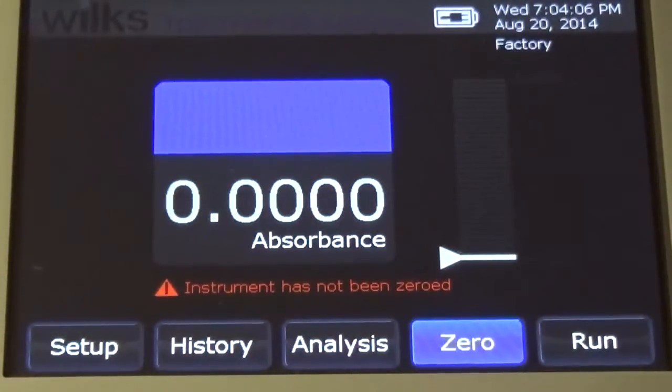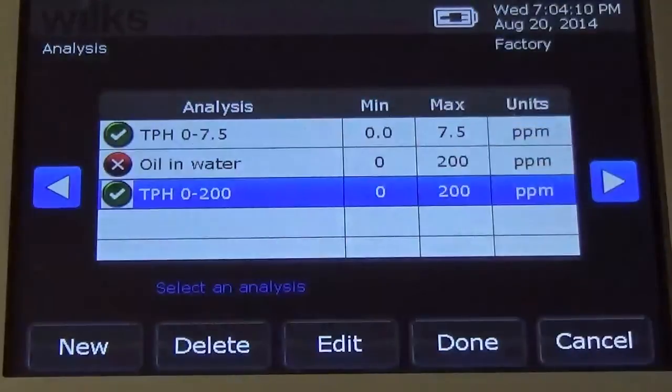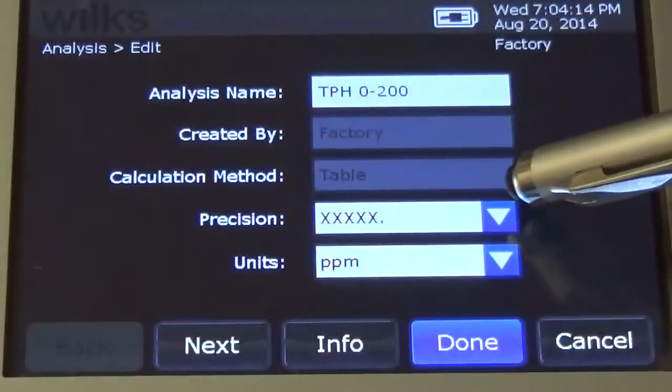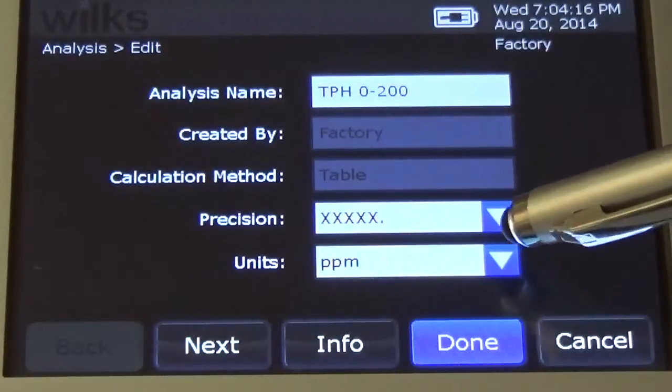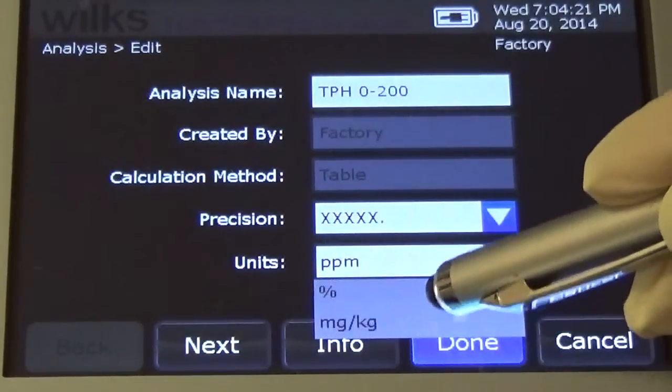Select Analysis and then highlight the appropriate factory calibration from the table. Select Edit. The precision should have no decimal points. Select the appropriate units, typically ppm or milligrams per liter.